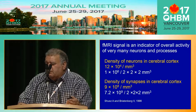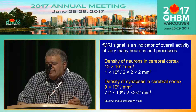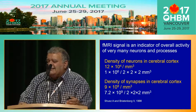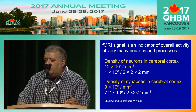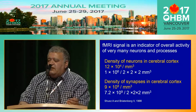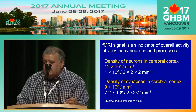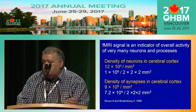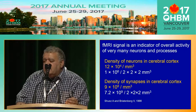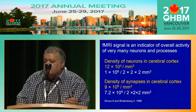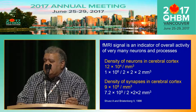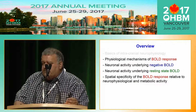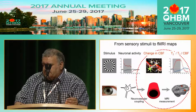Before we move on to functional MRI and the vasculature, a transition slide tells us that the functional MRI signal is an indicator of overall activity of very many neurons and processes, because within a conventional voxel at 3 tesla — say 2 by 2 by 2 millimeters — there are approximately 1 million neurons and 10 to the 10th synapses. We'll now talk about the physiological mechanism of the BOLD response.